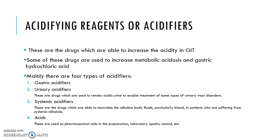Acidifying reagents, or acidifiers, are drug substances taken to increase acidity in the GIT — mostly to increase the gastric hydrochloric acid. There are four types of acidifiers: gastric, urinary, systemic, and acids. We will be focusing on the gastric acidifiers.